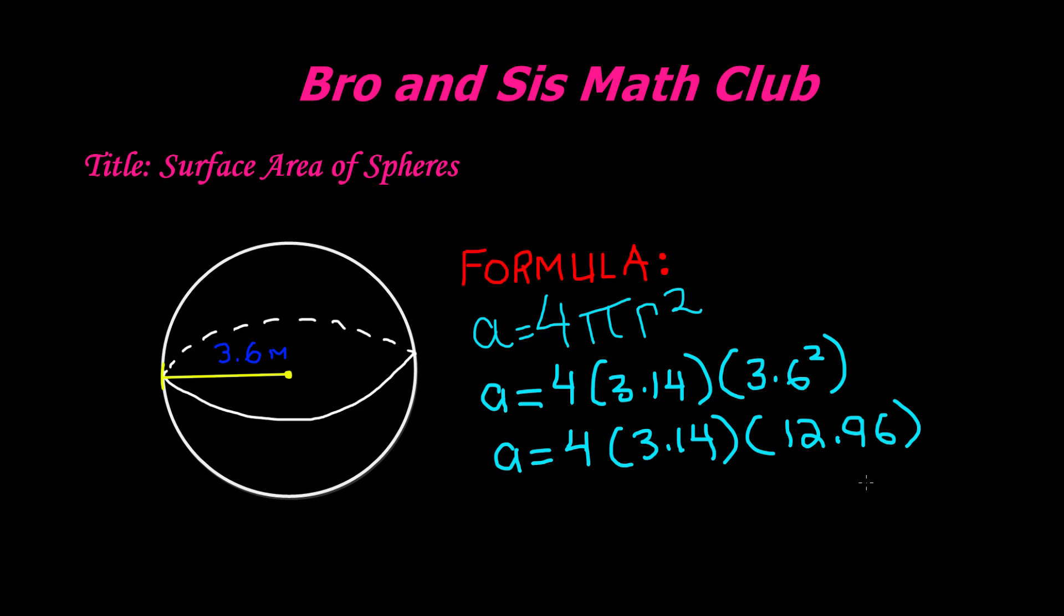Now we have to multiply all three together. So if you multiply 4 times 3.14, you get 12.56.